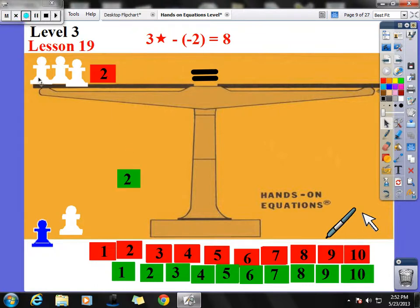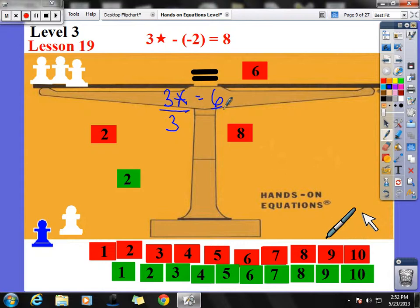That leaves me with 3 star plus positive 2 equals 8. And now I'm ready to solve. Simplify, isolate, solve, evaluate. Simplify, we want to take away a 2 from both sides. That leaves me with 8 minus 2, which is 6. And that leaves me with 3 star equals 6. To solve for star, I'm going to divide both sides by 3. And I get star equals 2.